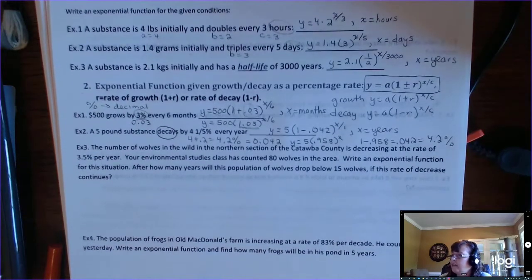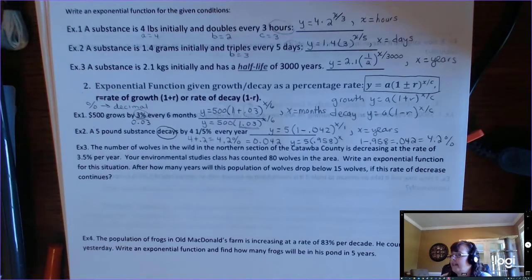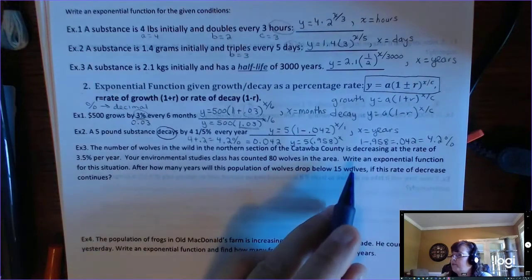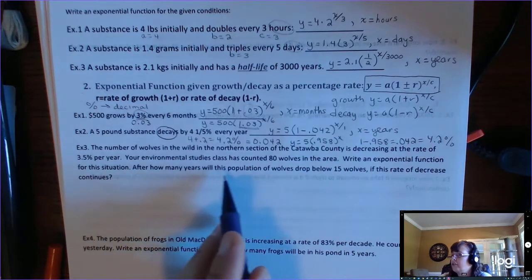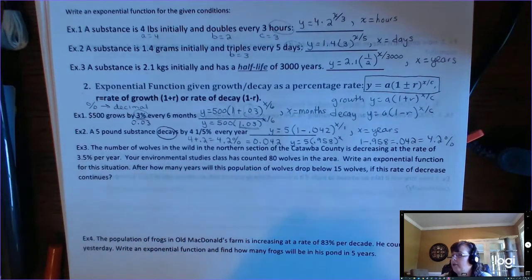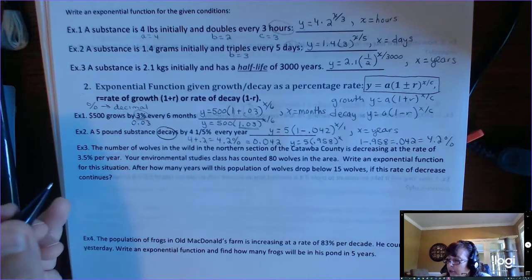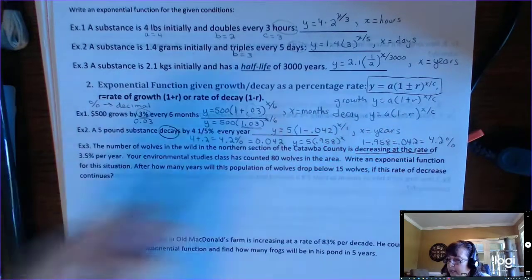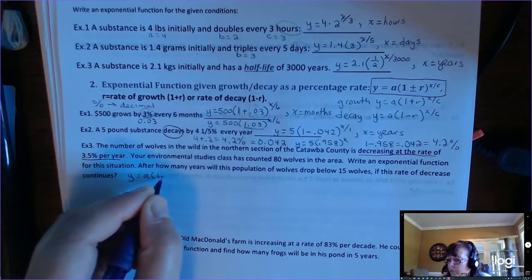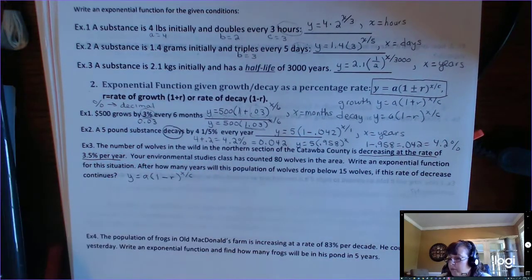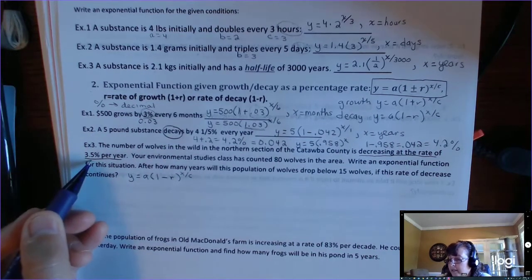Let's look at an example. The number of wolves in the wild in the northern section of the Catawba County is decreasing at a rate of 3.5% per year. Your international studies class has counted 80 wolves in the area. Write an exponential function for this situation. That's always what you want to do first. And then use that function to answer this question. After how many years will this population of wolves drop below 15 wolves? If this rate of decrease continues. So we know it's exponential. It says it's decreasing at a rate of. So we know it's exponential decay.